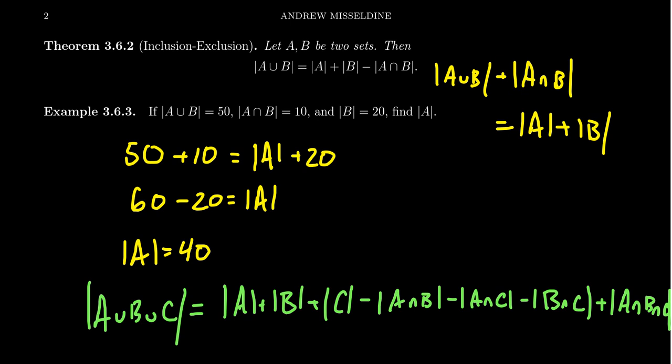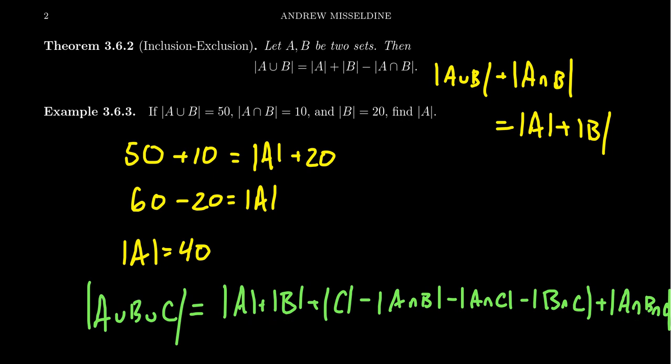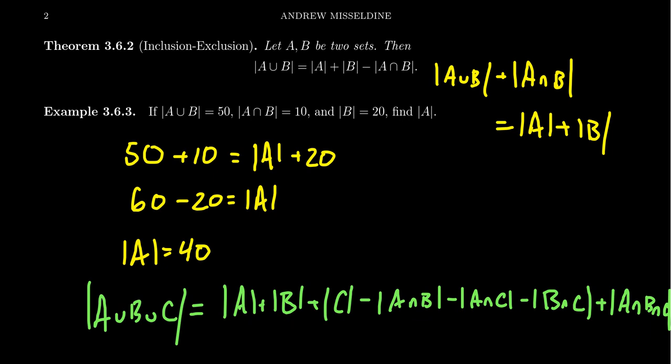This principle applies in general. For four sets, the cardinality is the sum of the individual cardinalities, minus the pairwise intersections, plus the triple intersections, then minus the quadruple intersection — there's only one of those. In general, you get an alternating sum: sums of cardinalities, minus sums of pairwise intersections, plus sums of triple intersections, and so on. This can be proven in general using induction, which we haven't introduced yet in this series, so for now we'll accept the inclusion-exclusion principle on two sets from our Venn diagram argument.